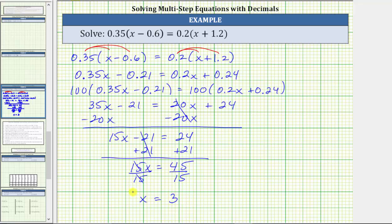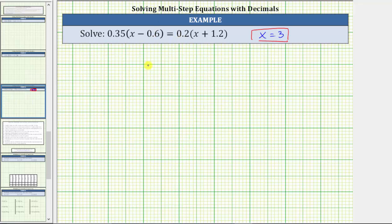The solution to the equation is x equals 3, which means if we substitute 3 for x in the original equation, it must satisfy the equation or make the equation true. Let's take the time and verify that our solution is correct. Substituting 3 for x in the original equation we have 0.35 times the quantity 3 minus 0.6 equals 0.2 times the quantity 3 plus 1.2.